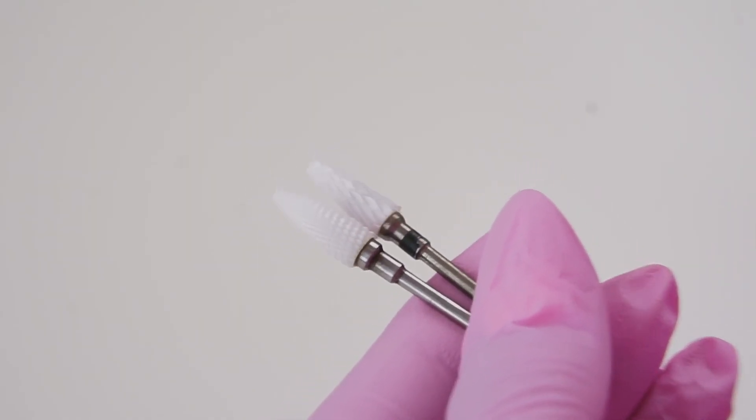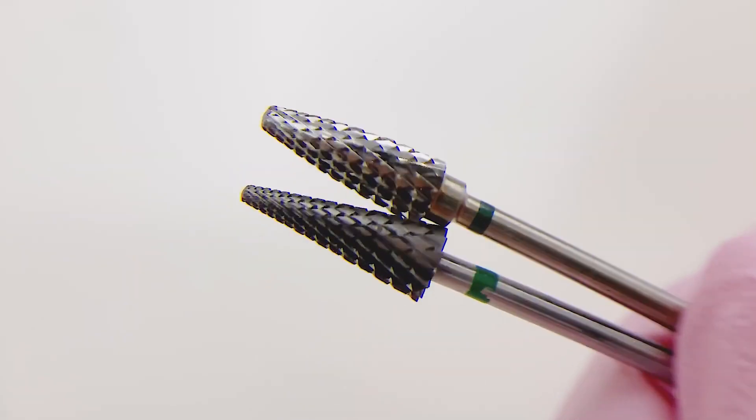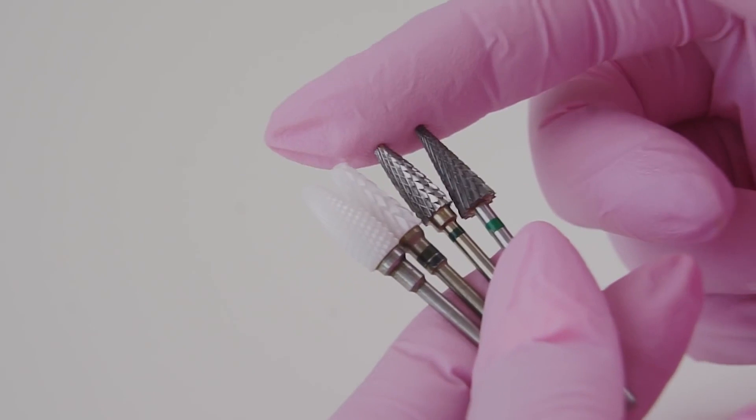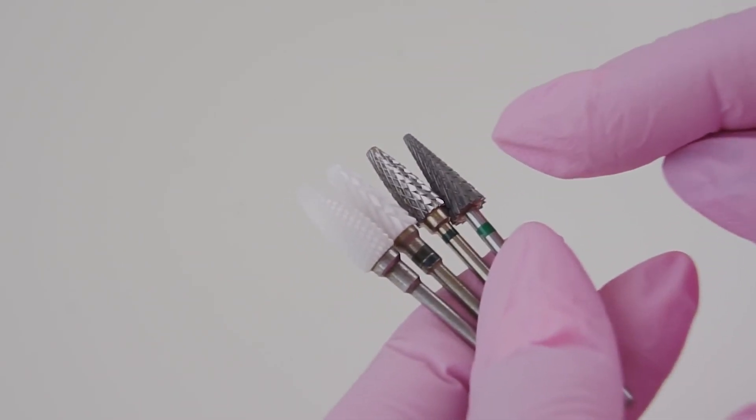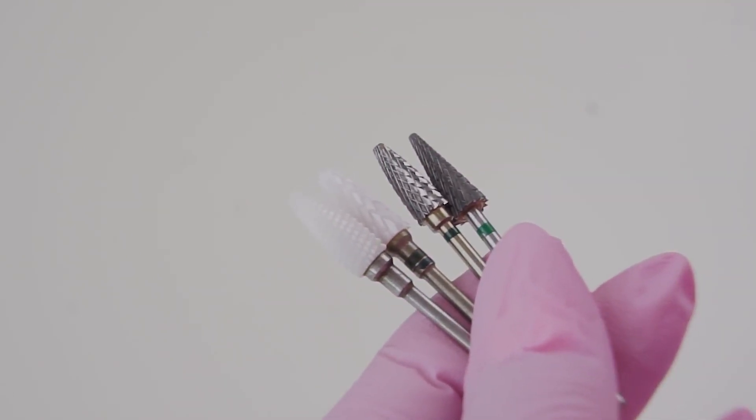What drill bit to choose for removal if you are a beginner? The drill bits can be ceramic and carbide. The first ones have thinner blades, so they remove the material roughly and intensely. And carbide bits are more suitable for beginners as they remove the material more gently.